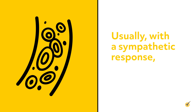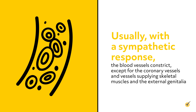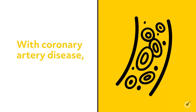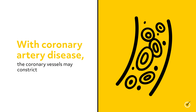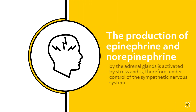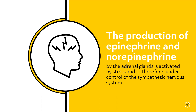Usually with a sympathetic response, the blood vessels constrict except for the coronary vessels, and vessels supplying skeletal muscles and the external genitalia. However, with coronary artery disease, the coronary vessels may constrict. The production of epinephrine and norepinephrine by the adrenal glands is activated by stress, and is therefore under control of the sympathetic nervous system.